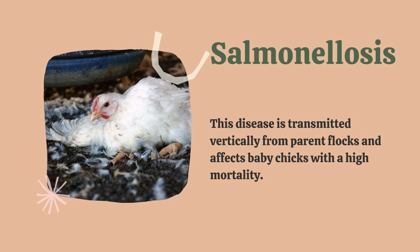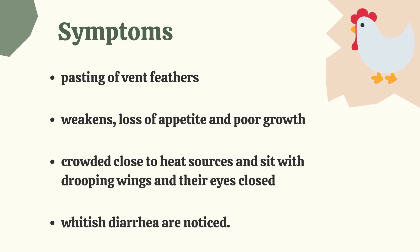The next bacterial disease we are going to discuss is salmonellosis. This disease is transmitted vertically from parent flocks and affects baby chicks with high mortality. Symptoms are pasting of vent feathers, weakness, loss of appetite, and poor growth. Chickens are crowded and close to heat sources and sit with drooping wings and their eyes closed. Whitish diarrhea is also noticed.